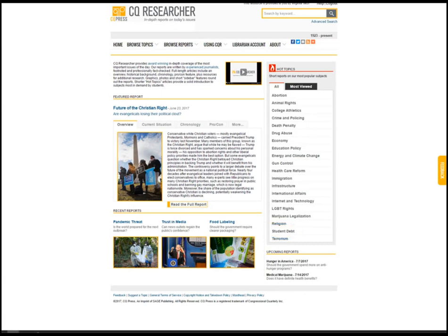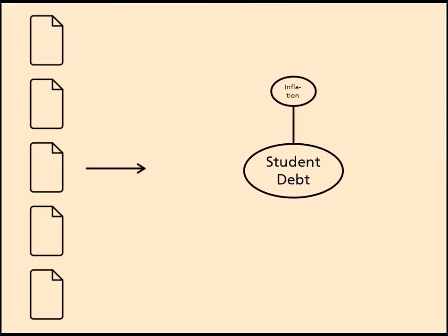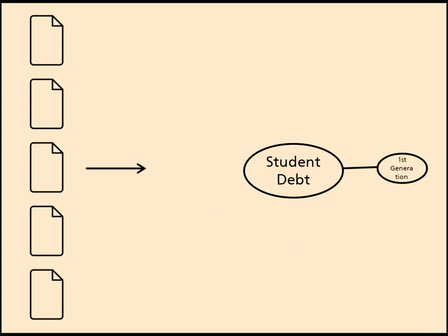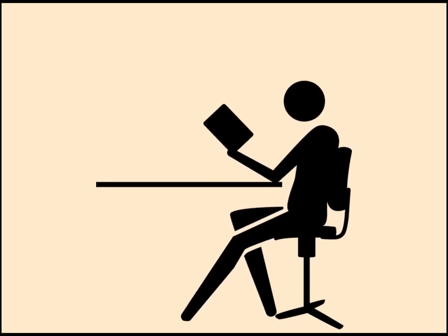You can browse through their list to find something that interests you and then read more about it. Once you find something that interests you, think about the scope of your paper. In 4-5 pages, I can't cover the entire topic of student debt, but I could cover a particular aspect of it, like the effect of student debt on first-generation college students. Before I can launch into searching for sources for my paper, I probably should do some more reading to understand the topic a bit better and make sure that I'm looking at an aspect of it that works within the scope of my paper.